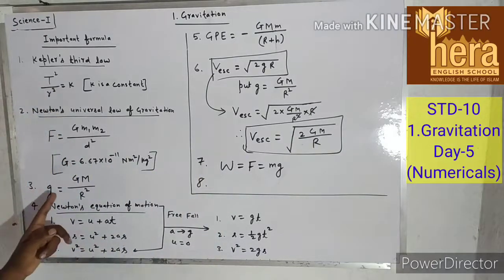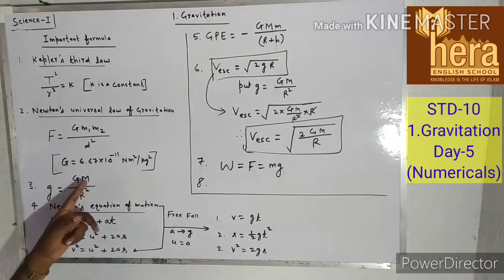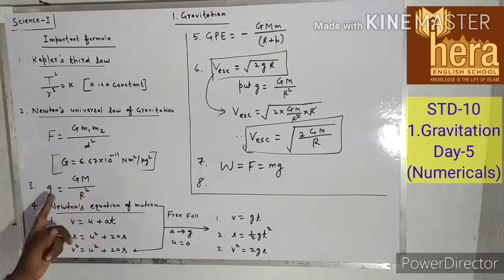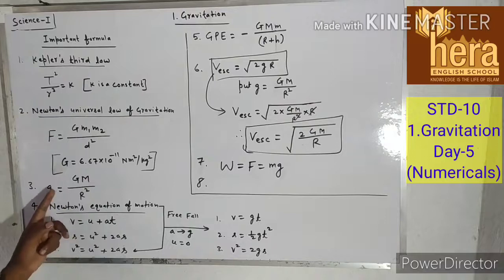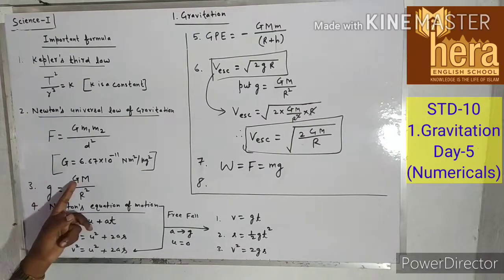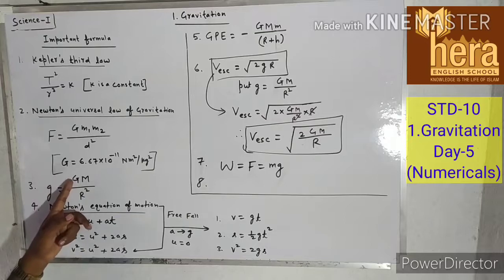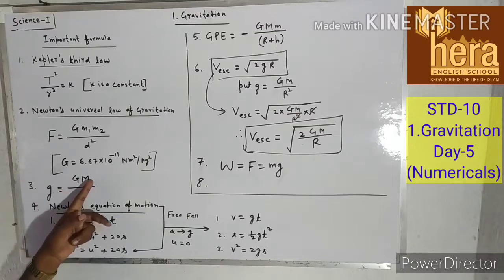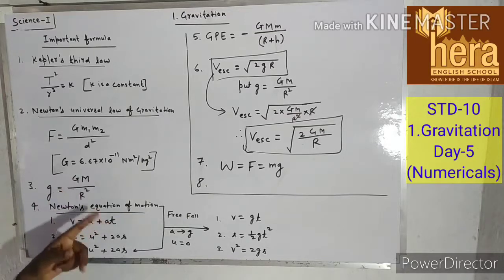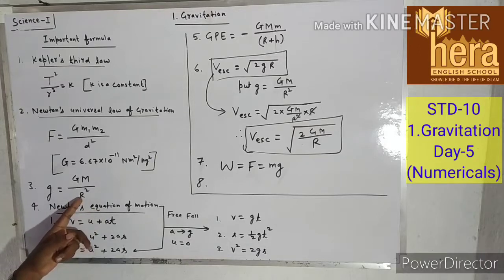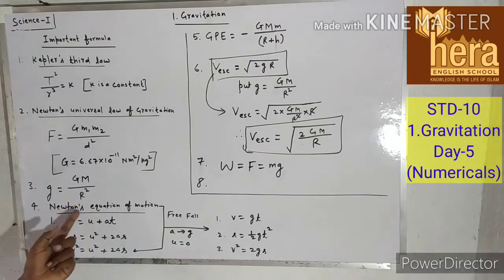g is equal to GM upon R squared, where g is the acceleration due to gravity, G is the universal gravitational constant, M is the mass of the planet, and R is the radius of the planet.